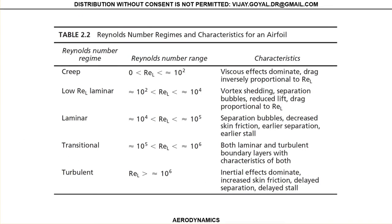The Reynolds number is a dimensionless parameter. If the number is in the order of 0 to 100, the viscous effects dominate — meaning you're going to have very large drag. This is low Reynolds number laminar flow. In the range between 100 and roughly 1000, you're going to have some separation — bubble separation — and reduced lift. This is very important.